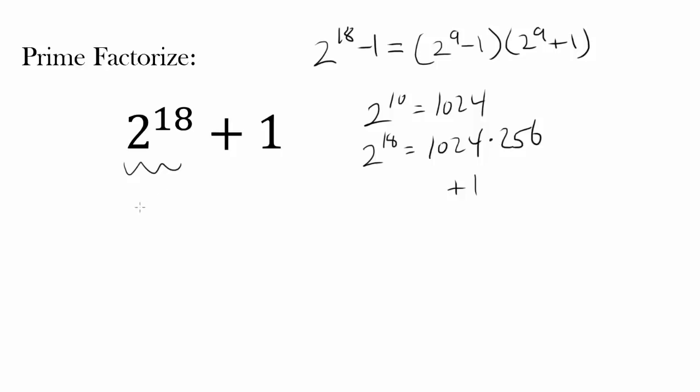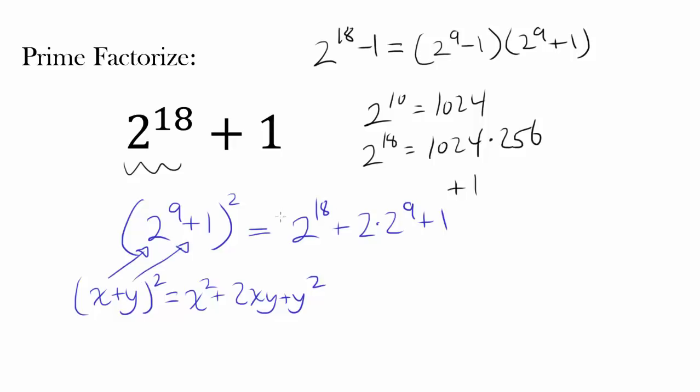Well, this expression looks very close to 2 to the 9th plus 1 squared, which is 2 to the 18th plus 2 times 2 to the 9th plus 1. If you're confused on how I'm getting this, remember that x plus y squared is x squared plus 2xy plus y squared. In our case, our x is 2 to the 9th, our y is 1.